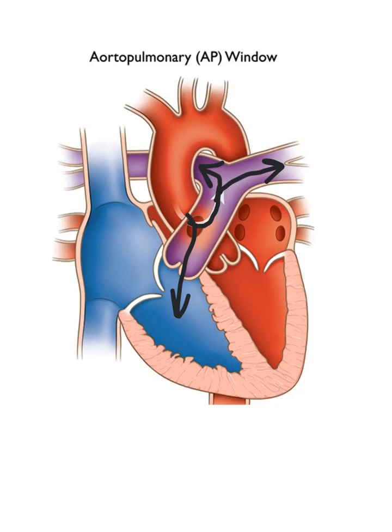If you do see this, it's so important to get a hold of the peds cardiologist and tell them you need to come up here — you think you see an AP window. Let the doc look at it and they'll take it from there. Usually they notify the surgeon right away, or they medevac the child out on a helicopter and get them to someplace where they can do the surgery rather quickly.